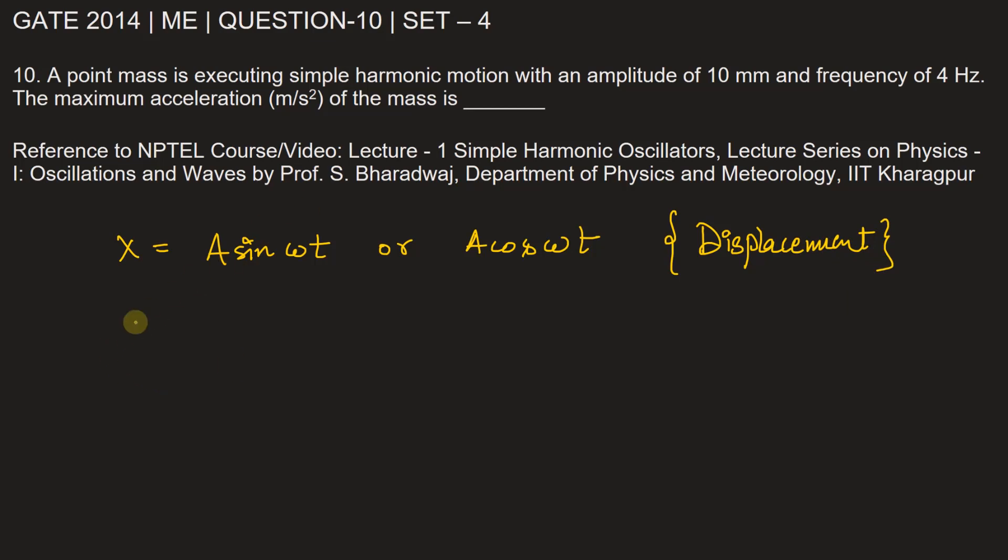In the problem, A is equal to 10 millimeters and frequency is 4 Hertz. Therefore, we can calculate the angular velocity omega, which is equal to 2 pi f. So 2 pi times 4 gives us 8 pi radians per second.